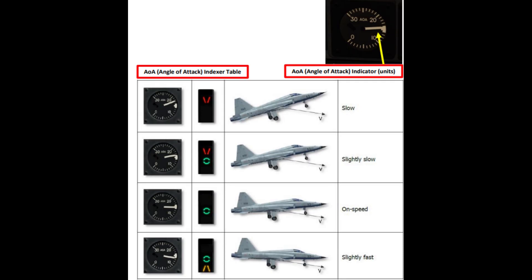You might be wondering what angle of attack is. Angle of attack simply put is the angle of the aircraft in relation to the direction of travel. As you can see here, if you are going too slow, we will have a high AOA, and you will see this red V on the indexer table — that indicates you are going too slow. And if it is green, that means it is perfect. We are roughly at an angle of attack of 17 to 18 degrees, which is perfect.